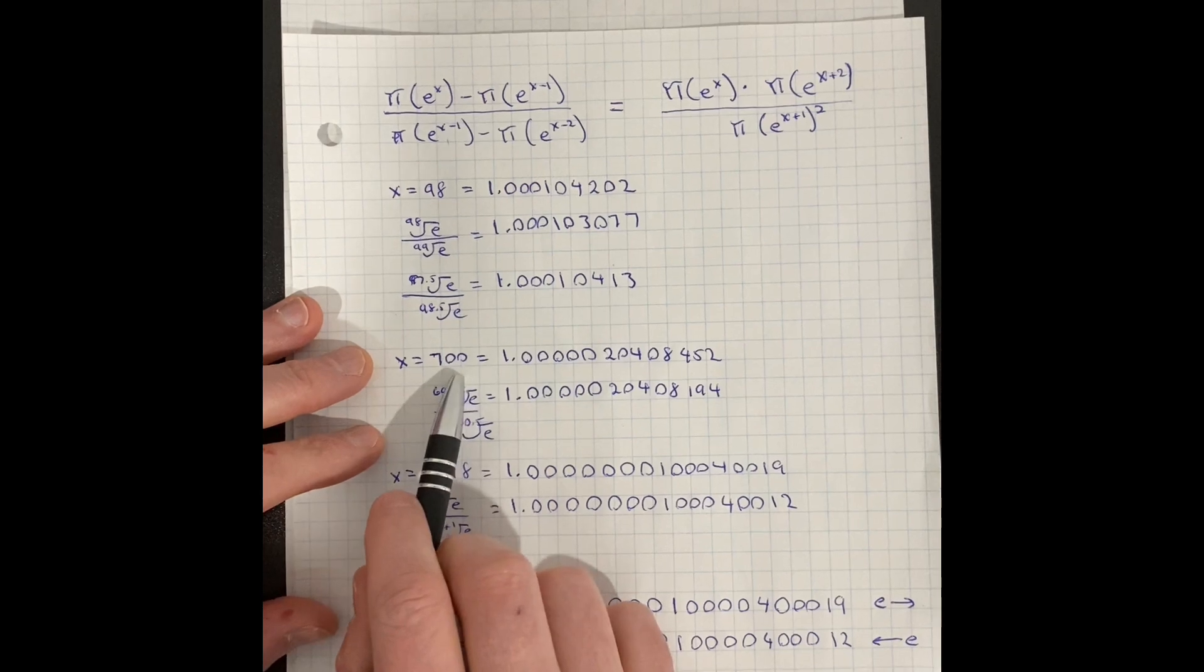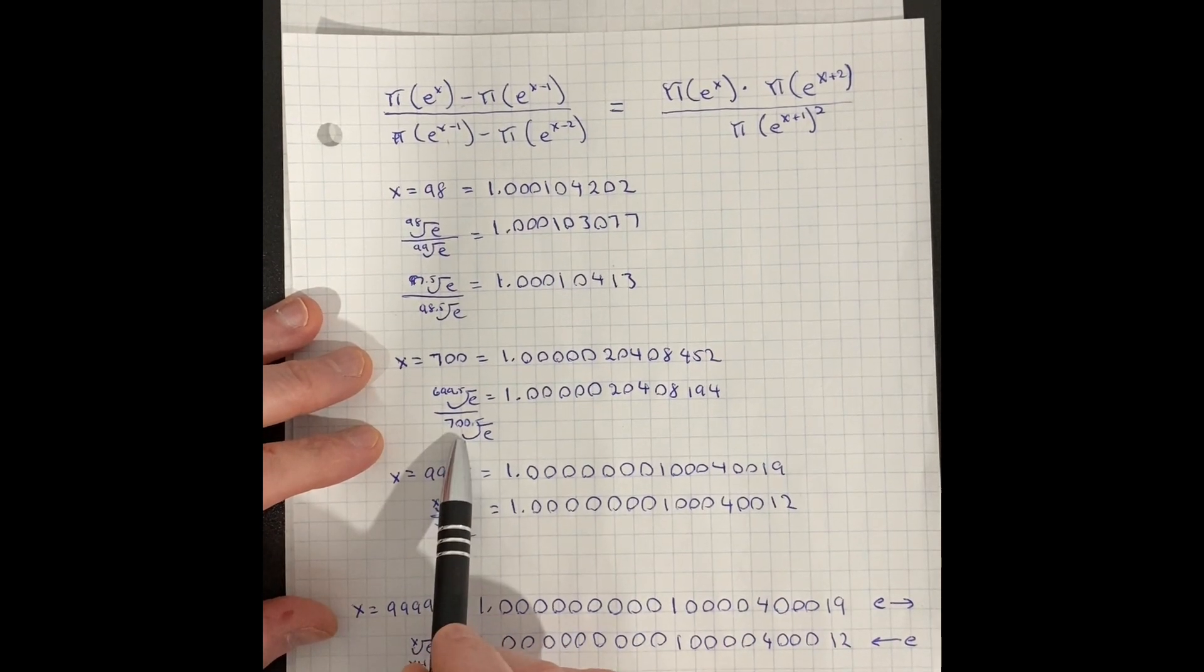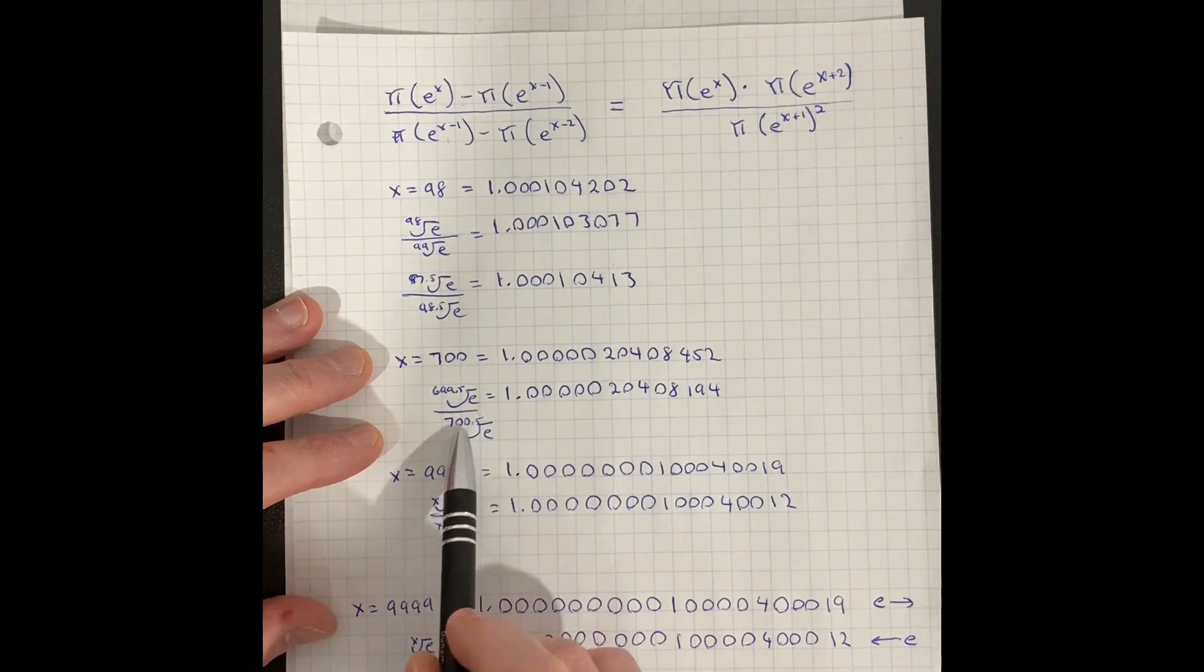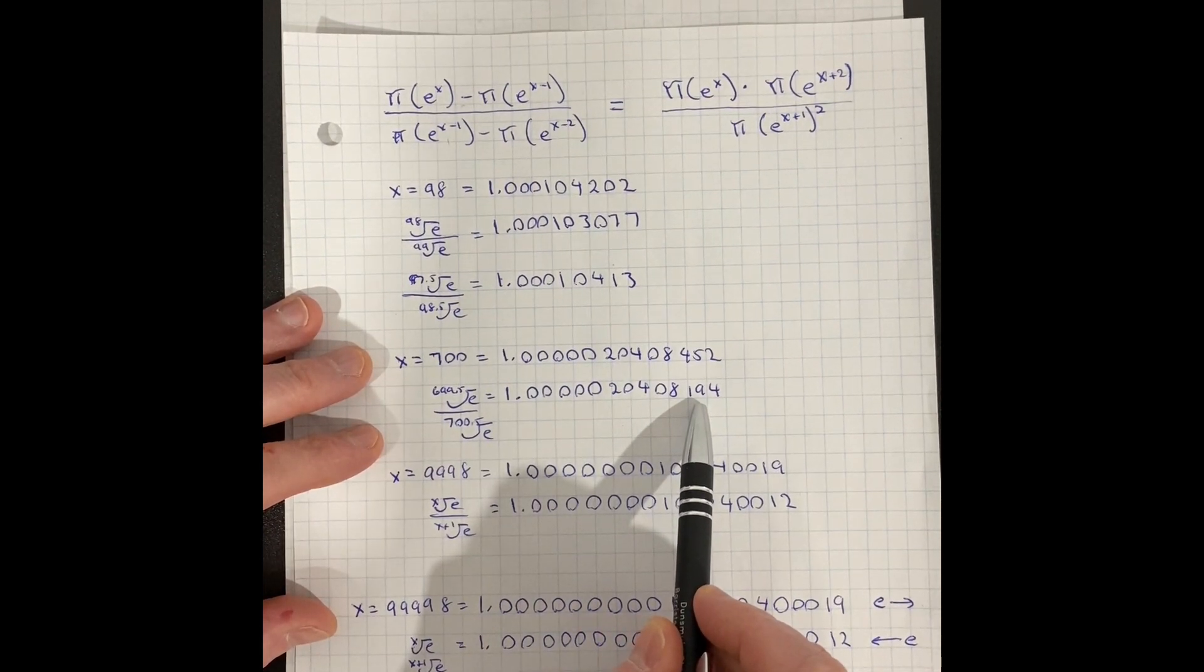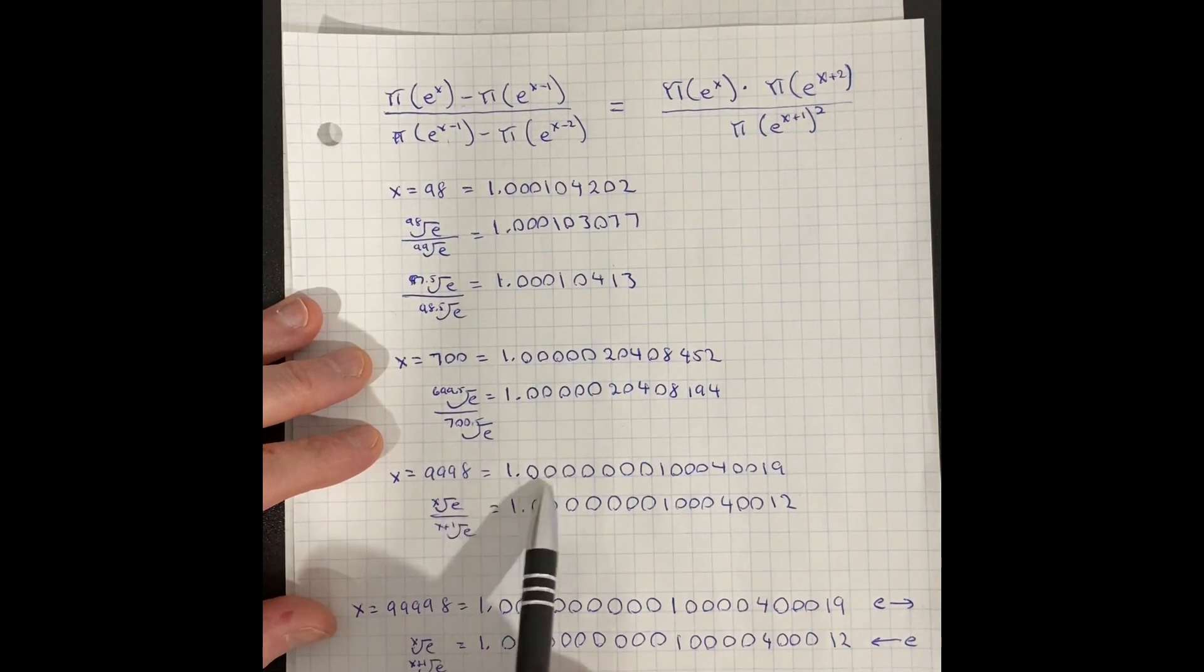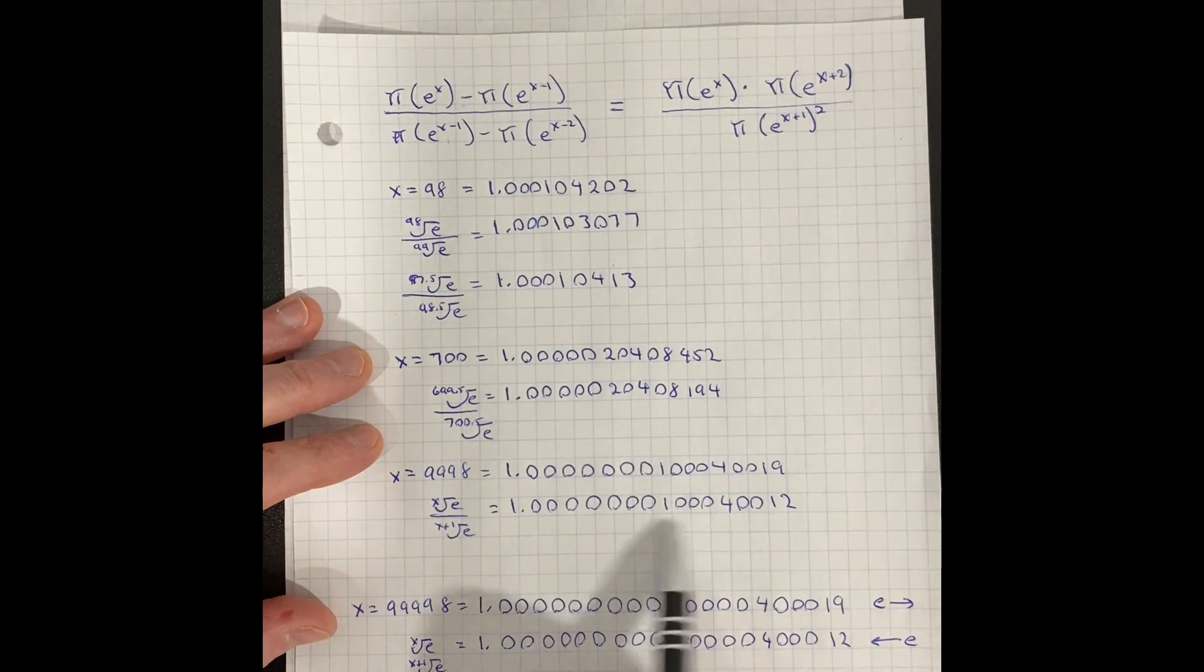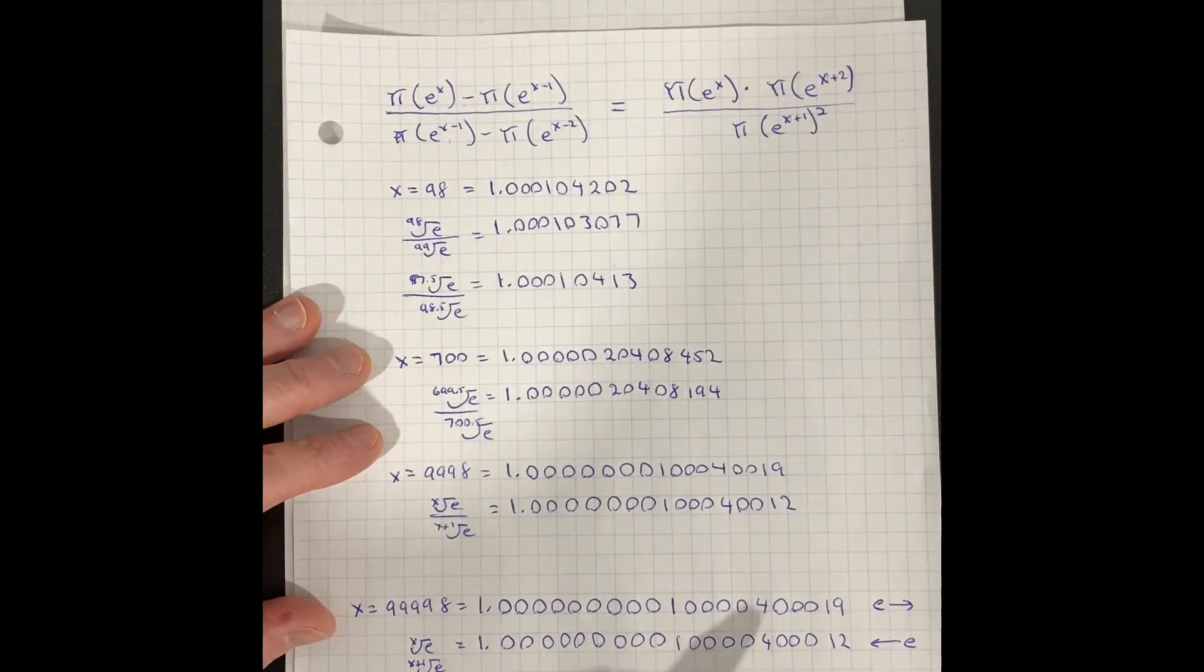So yeah, x to the 700 for this equation equals this. And if we set this to, you know, 700, 0.5, whatever, you can see they're getting a lot closer. And x to 9,998, like these numbers are ridiculously close. Here's even a bigger number. There you go. So this one is exponential growth, and this one is exponential decay.